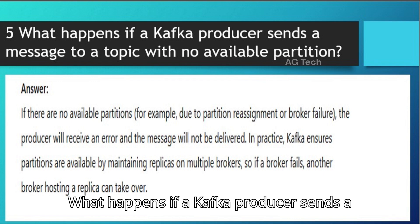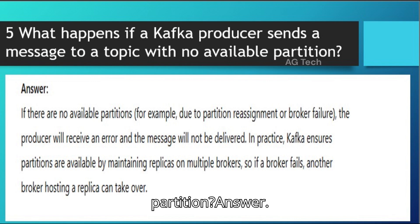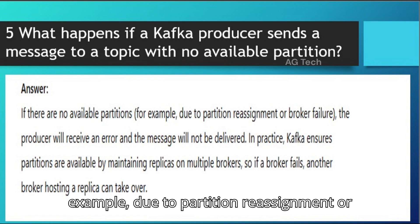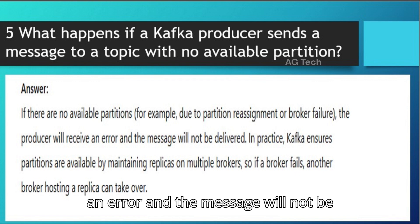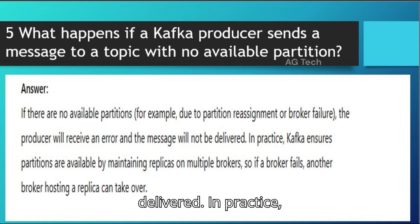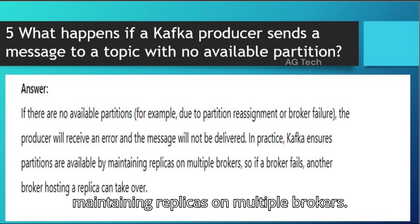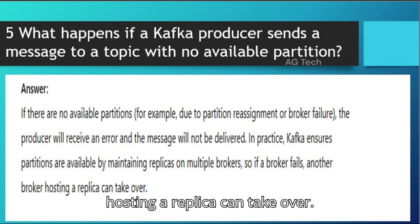Question 5: What happens if a Kafka producer sends a message to a topic with no available partition? Answer: If there are no available partitions — for example, due to partition reassignment or broker failure — the producer will receive an error and the message will not be delivered. In practice, Kafka ensures partitions are available by maintaining replicas on multiple brokers, so if a broker fails, another broker hosting a replica can take over.